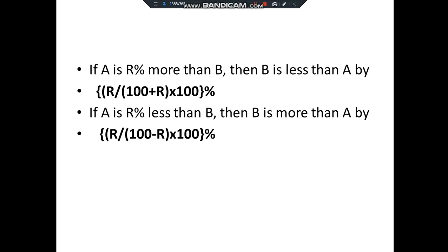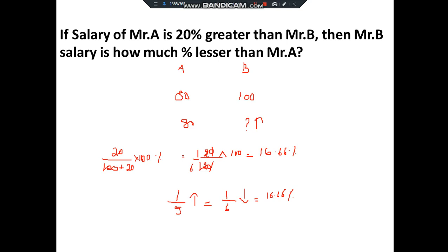The formula is: if A is r% more than B, then B is less than A by r/(100+r) × 100%. Substituting, r = 20: 20/(100+20) × 100 = 20/120 × 100 = 1/6 × 100 = 16.66%. If A is r% less than B, then B is more than A by r/(100−r) × 100%.